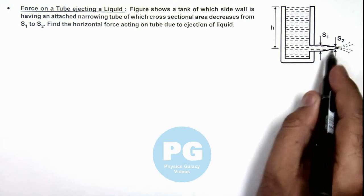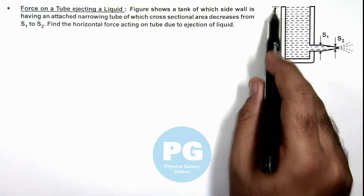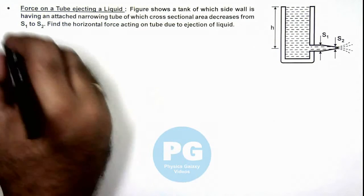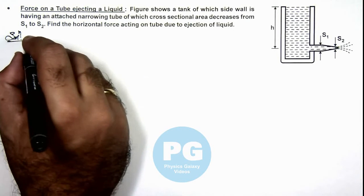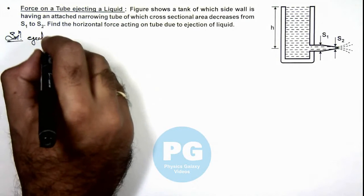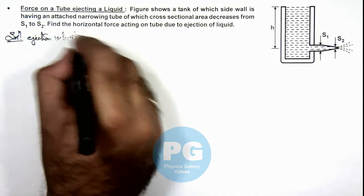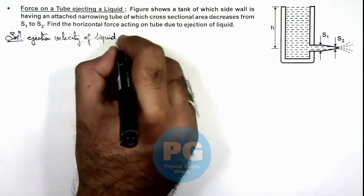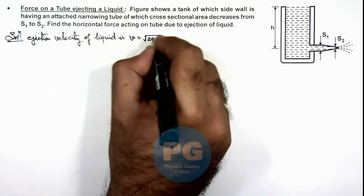So in this situation, first thing we can directly write down: as the tube is at a depth h below the open surface of the liquid, we can directly write down that the ejection velocity of liquid is, this ejection velocity we can directly write down, will be √(2gh).